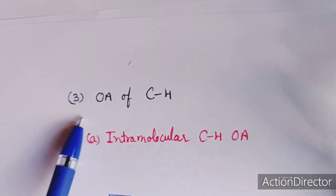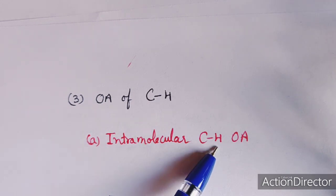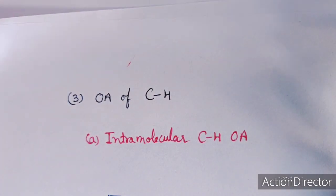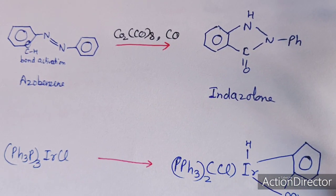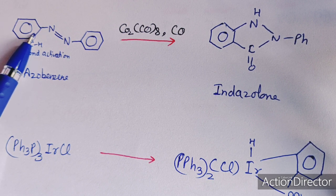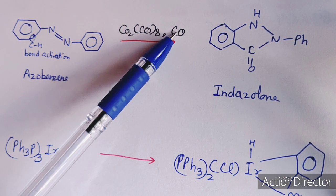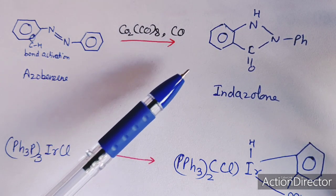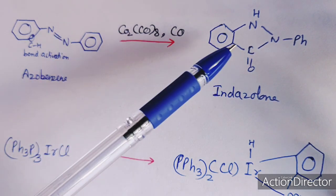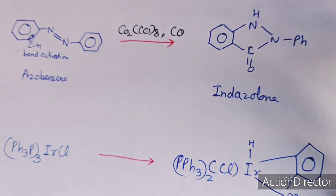Now we will see the example of oxidative addition of the CH bond. This oxidative addition of a CH bond is of two types: intramolecular CH oxidative addition or intermolecular CH oxidative addition. In the first example, I will show the intramolecular oxidative addition of the CH bond. This is an azobenzene, and you can see that this CH bond will activate and add to the carbonyl group — this is the activation of the CH bond, a kind of intramolecular oxidative addition reaction.